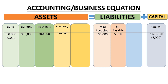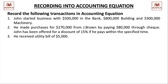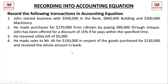Income and expenses are recorded in the Statement of Profit and Loss. When income exceeds expenses, it is profit and is added to capital. When expenses exceed income, it is a loss and is deducted from capital.